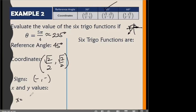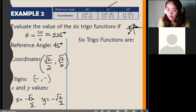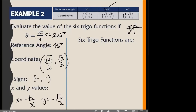Since we are in quadrant 3, the signs will be negative, negative. So your x value is negative square root of 2 over 2, and your y value is negative square root of 2 over 2.